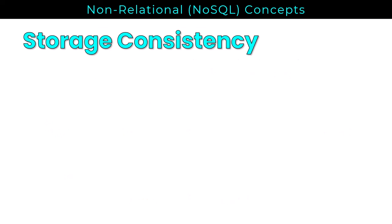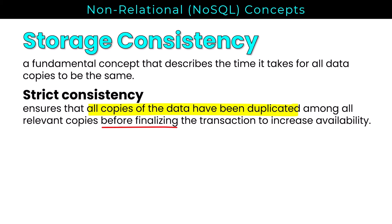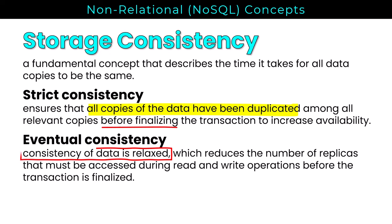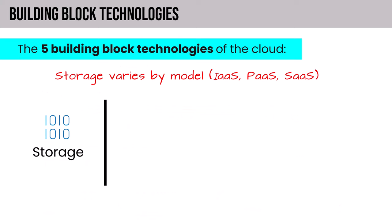You should be familiar with storage consistency, which describes the time it takes for all data copies to be the same. Strict consistency ensures all copies of the data have been duplicated amongst all relevant copies before finalizing the transaction. Eventual consistency relaxes data consistency, reducing the number of replicas that must be accessed during read and write operations — data changes are eventually transferred to all copies via asynchronous propagation. Depending on the NoSQL flavor, some cloud services offer degrees of consistency between strict and eventual.